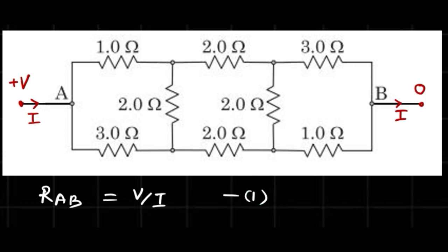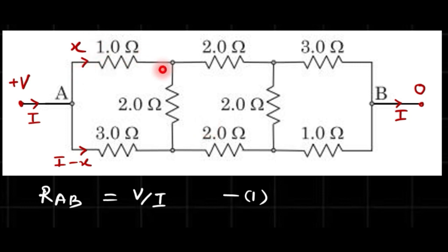Now let's see the symmetry of the problem. The current I entering at A splits into two parts — suppose the current in one part is x. By KCL, the remaining current is i minus x. By symmetry, since this is 1 Ω, this is 1 Ω, this is 3 Ω, and this is 3 Ω — all four are the same — the current on the symmetric branch is also x, and the other symmetric branch also carries i minus x.